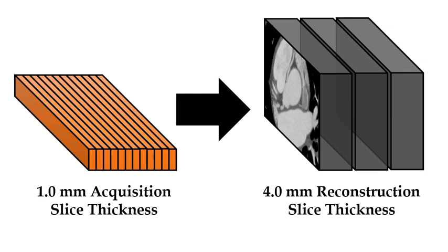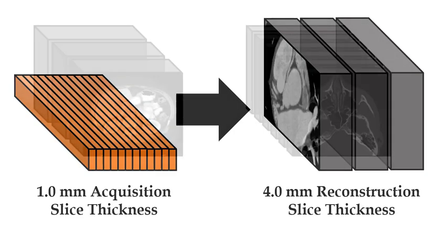Think of it like this: the raw data is one millimeter thick — that's the acquisition thickness — but the image data would be four millimeters thick. That's the reconstruction thickness.